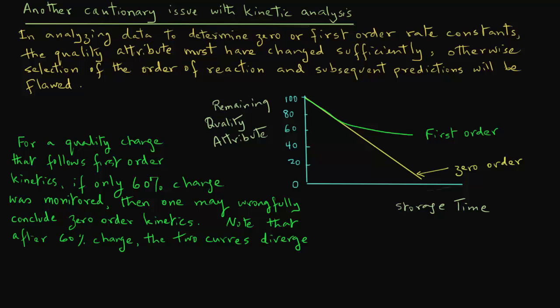So, if in reality, the reaction follows first order kinetics and you assume that it is zero order because you did not follow the reaction sufficiently, then your predictions will be flawed because you will be using a linear reduction in that quality attribute where the quality attribute will be decreasing only in an exponential manner and the values will be much higher than what zero order kinetics may predict.